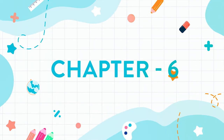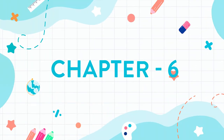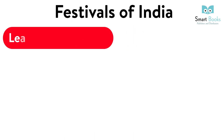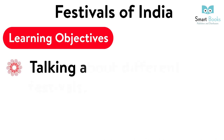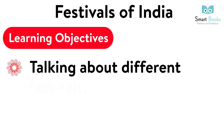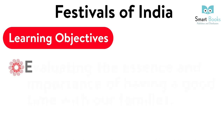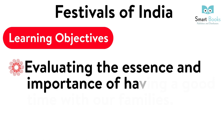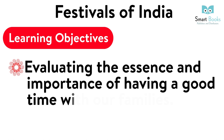Chapter 6: Festivals of India. Learning Objectives: 1. Talking about different festivals. 2. Evaluating the essence and importance of having a good time with family. Warm Up.